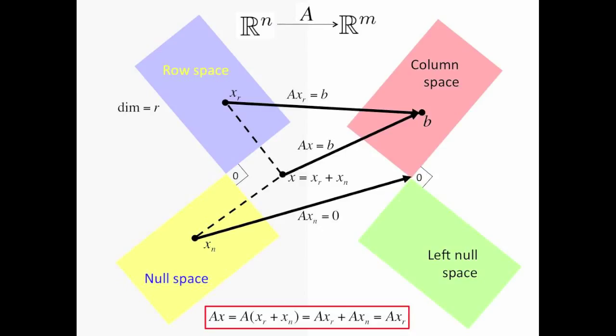In that case, the column space also has dimension r. You can use that to argue that A is a one-to-one mapping between the row space and the column space of A. The null space then has dimension n minus r, and the left null space has dimension m minus r.